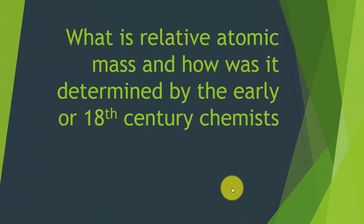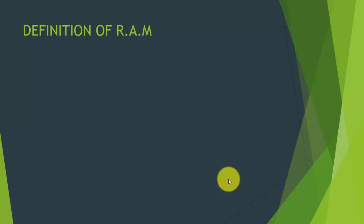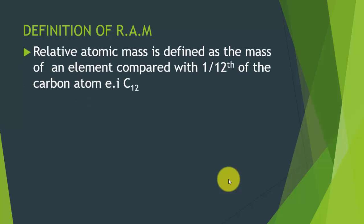Hello friends, today I will show you what is relative atomic mass and how it was determined by early 18th century chemists. But before we go into the discussion, let me define what relative atomic mass is. Relative atomic mass is defined as the mass of an element compared with one-twelfth of the carbon atom.